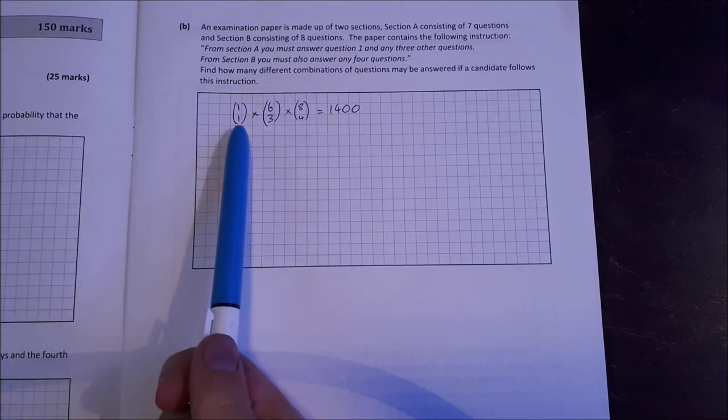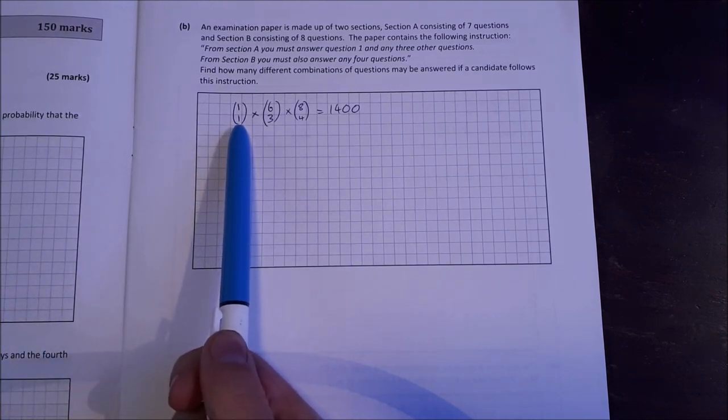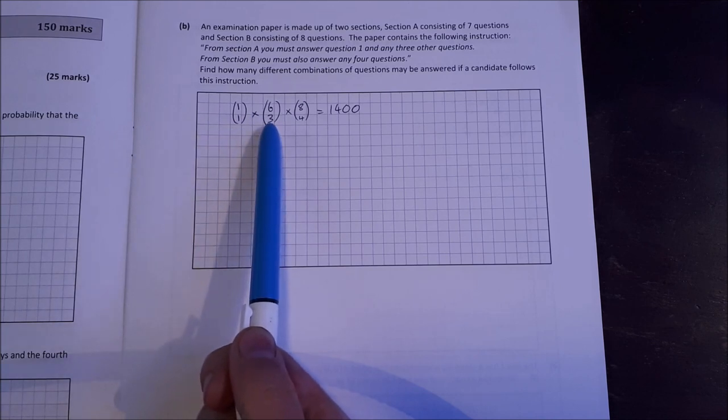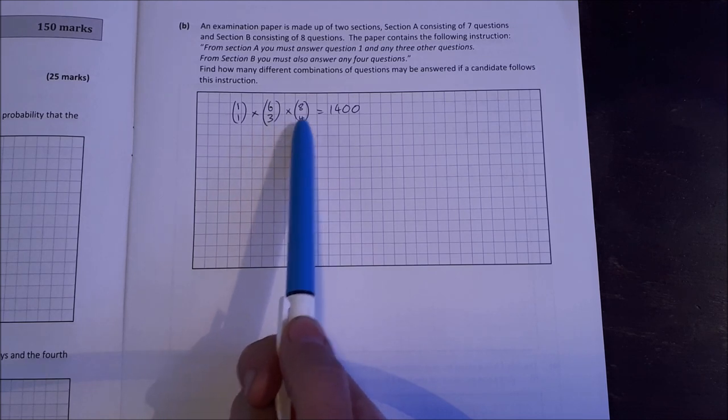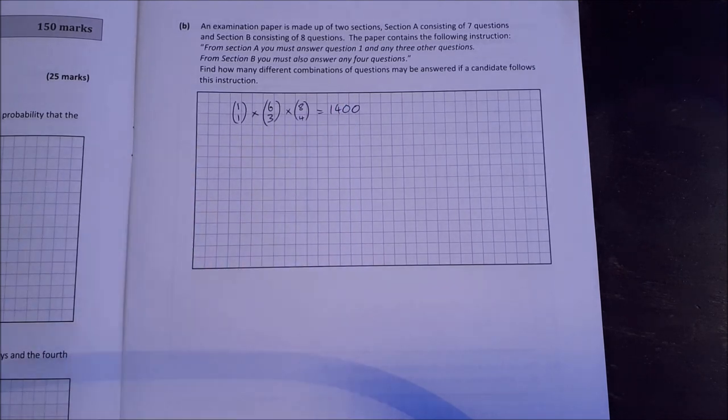So we have to do question one in section A. So that's one choose one. Out of the rest of them we choose three out of six. Six choose three and then section B is eight choose four. Into your calculator you'll get 1400.